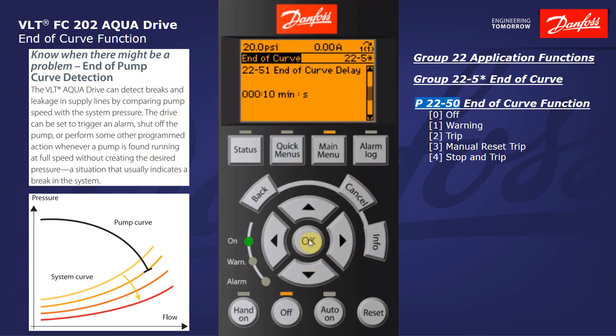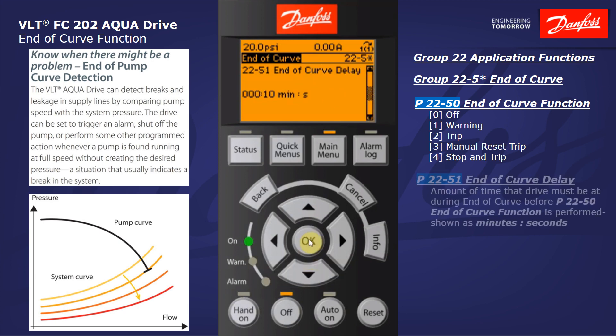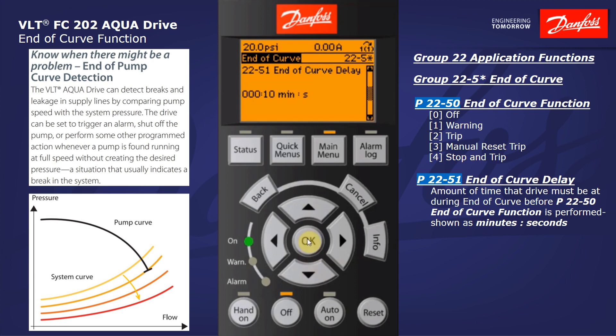Let's move down to the end of curve delay, parameter 2251. This is the amount of time that the drive must be in the end of curve situation prior to the action selected in 2250 being executed. I have 10 seconds here — a 10 second delay prior to the trip.